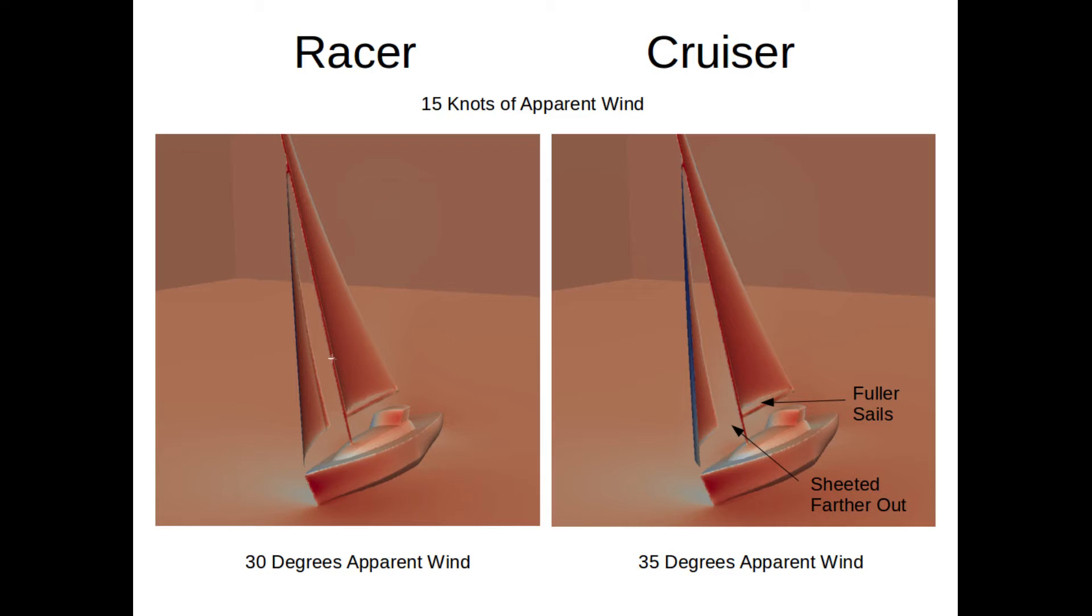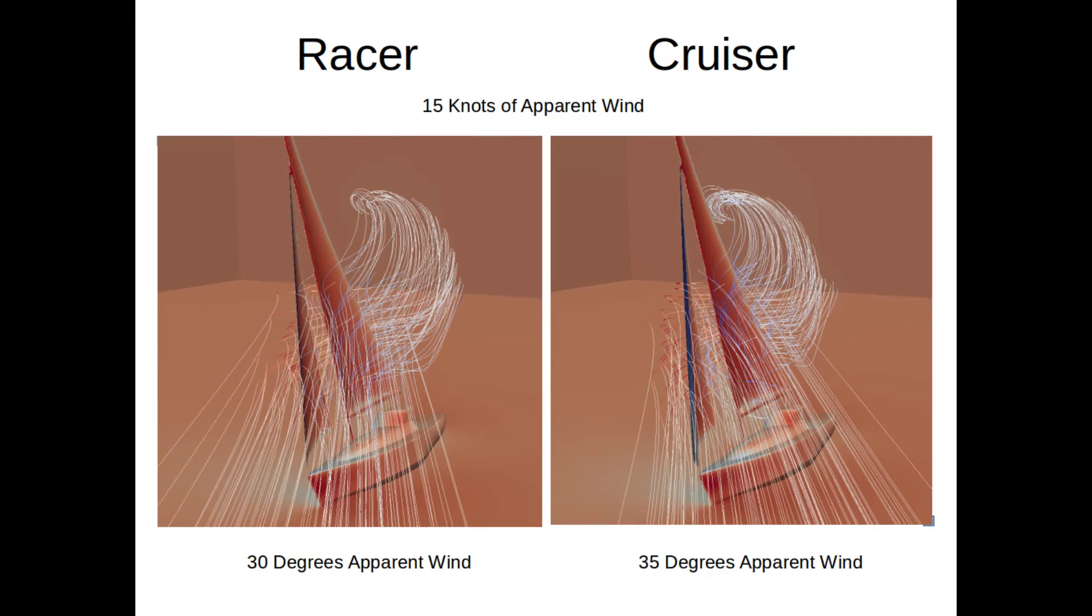To see the apparent wind angle, let's add streamlines to these images. The white lines are streamlines, which are the path that imaginary little bits of fluff would take as they flowed with the air through the model. You can see there's about a 5 degree difference in the angle that the air is approaching the sailboats - the racer is at 30 degrees apparent wind, the cruiser is at 35 degrees. The general path of the air is quite similar, but if you look closely you'd see that the more curved sails for the cruiser are generating bigger velocity differences between the two sides of the sails, and that'll lead to bigger pressure differences.